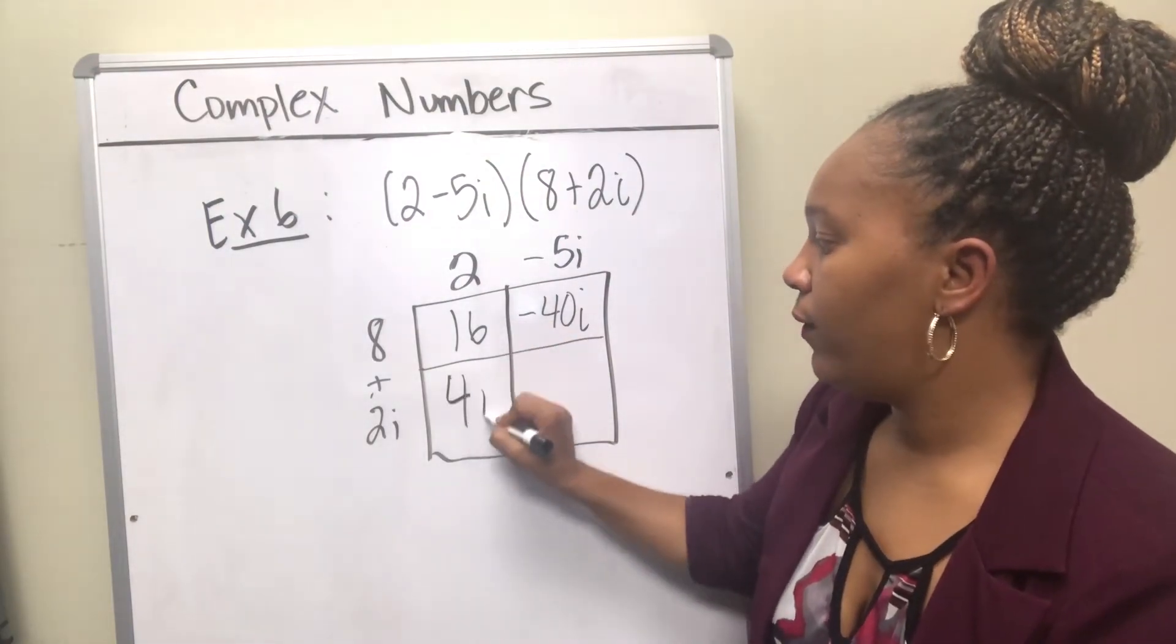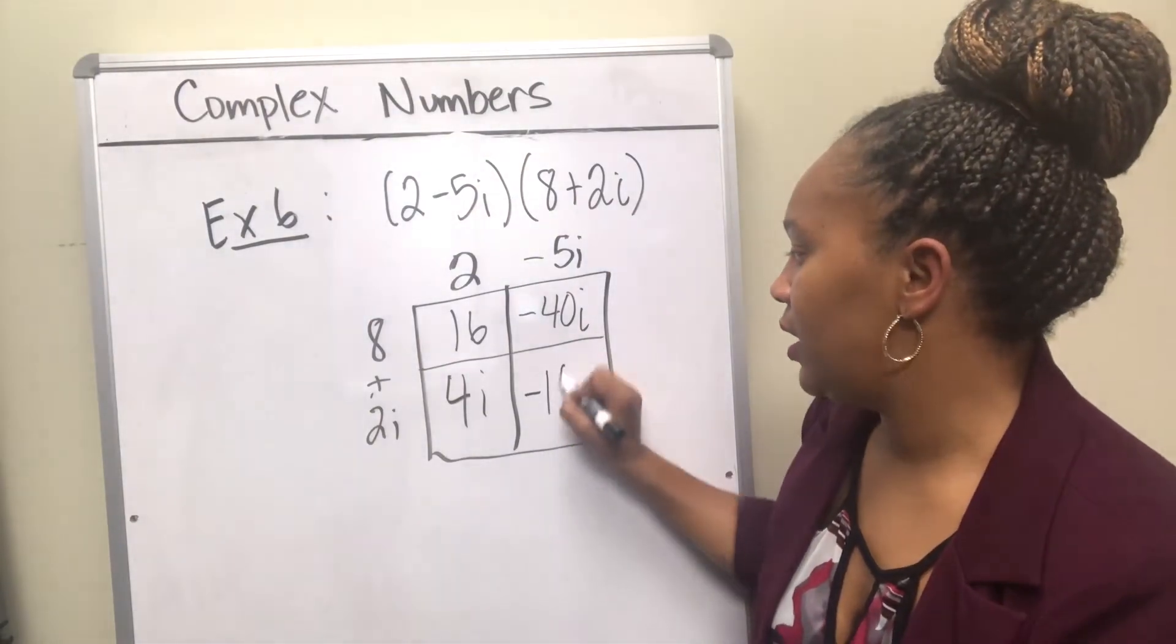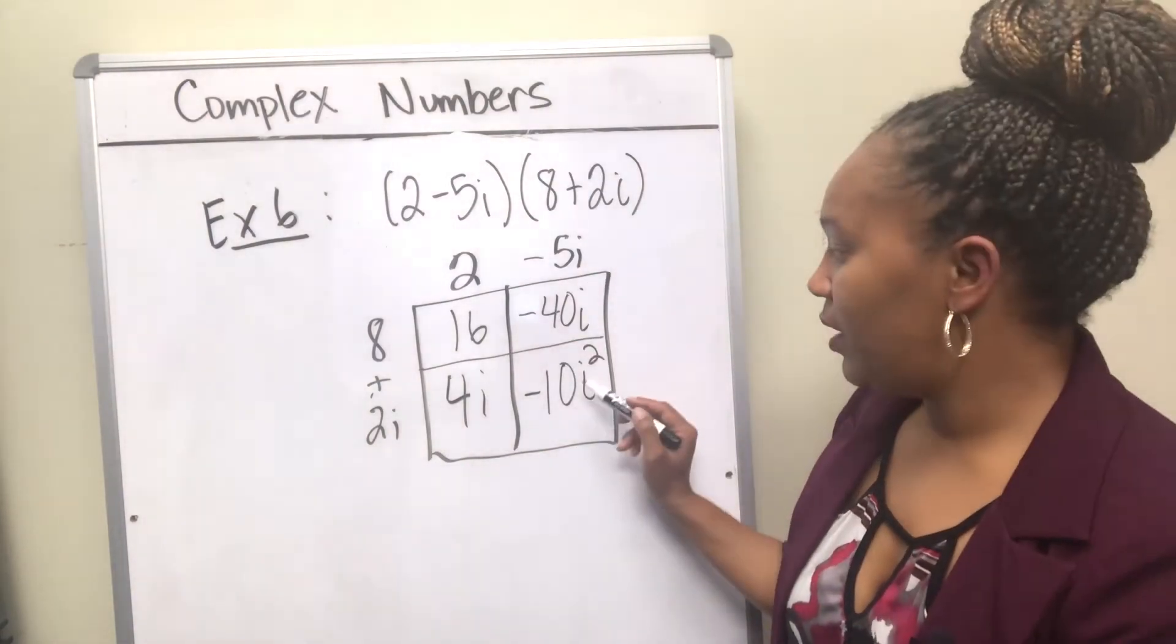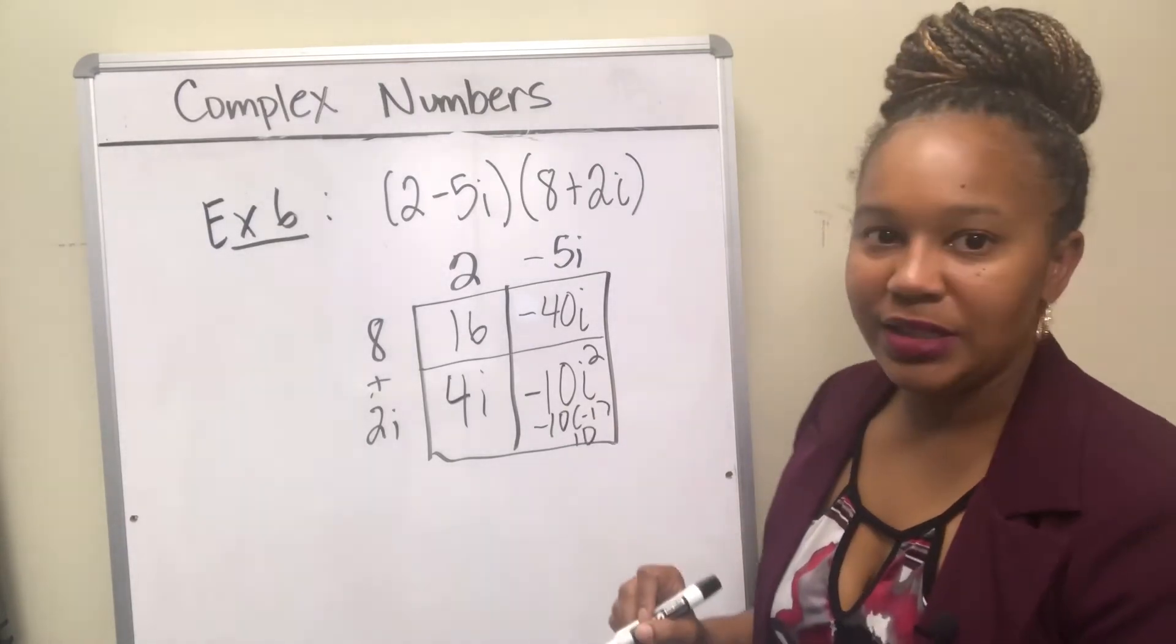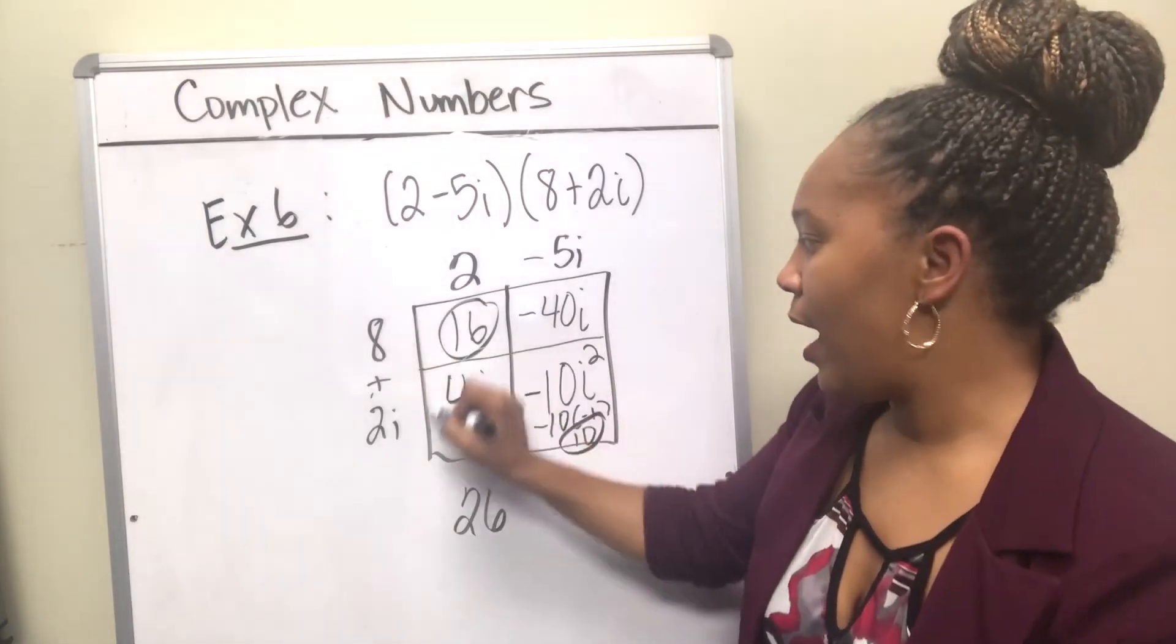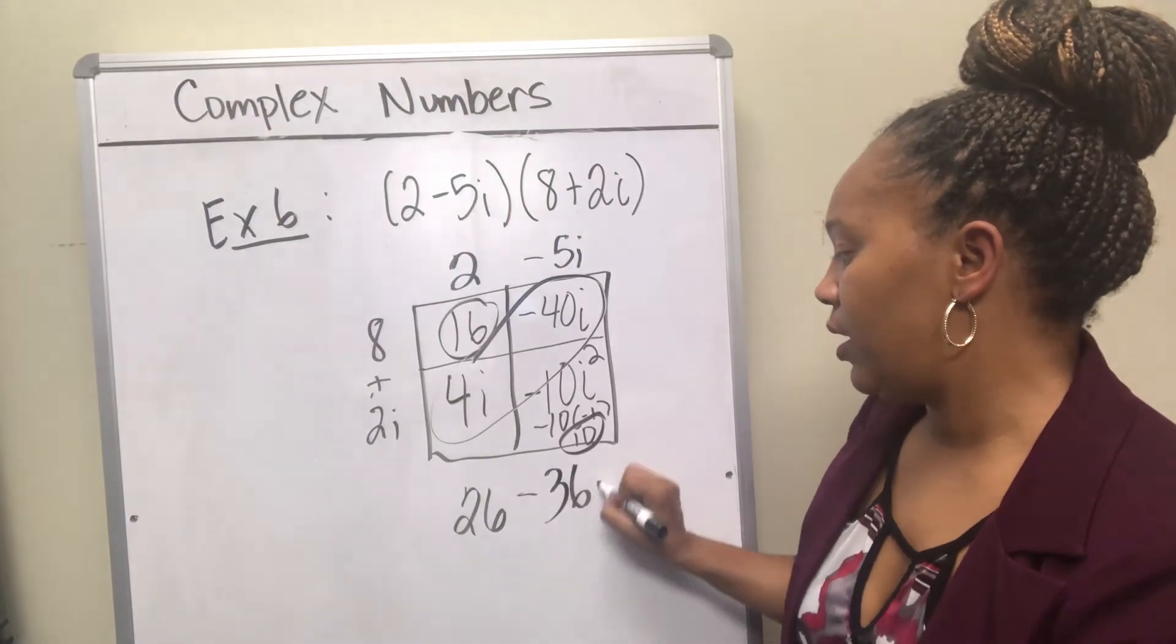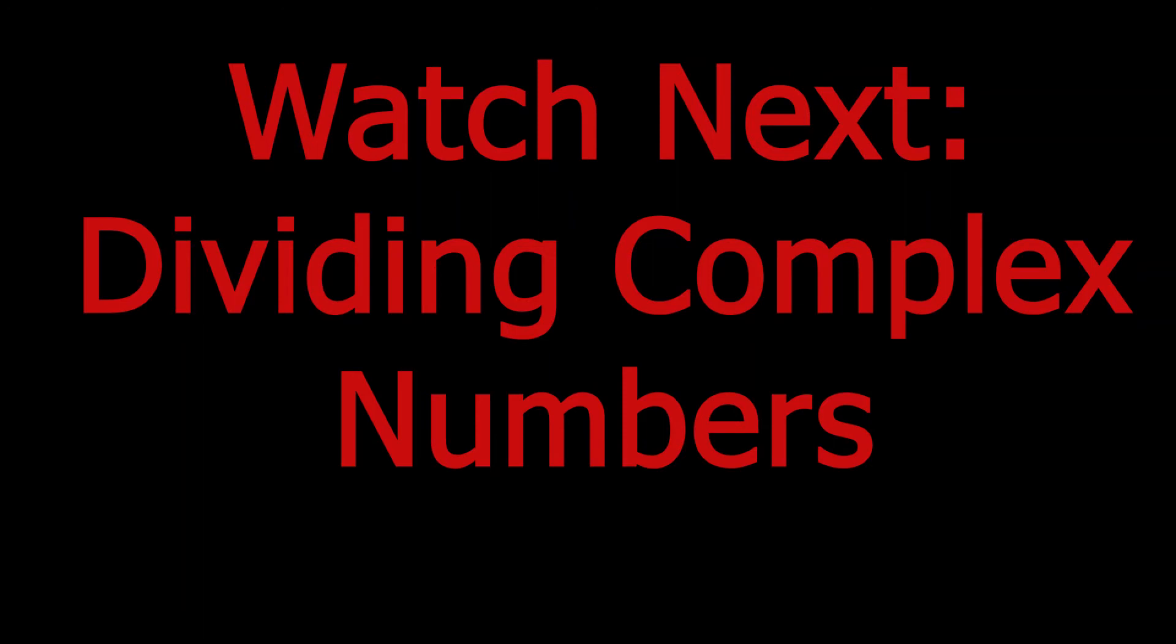Two i times 2 is 4i, and 2i times negative 5i is negative 10i squared. And then inside the box, you see the i squared can be changed to negative one. So negative 10 times negative one becomes a positive 10. And then just combine terms in the box. So 16 and 10 is 26, and 4i and negative 40i becomes negative 36i. So that's just another way to work the same problem.